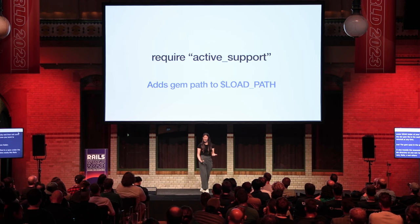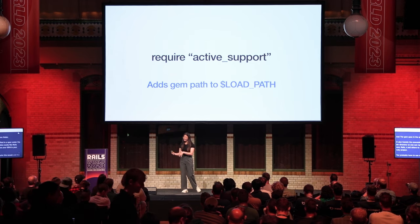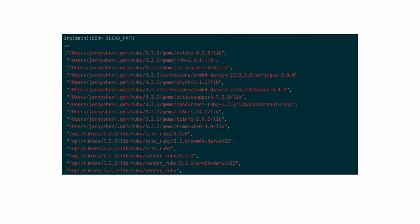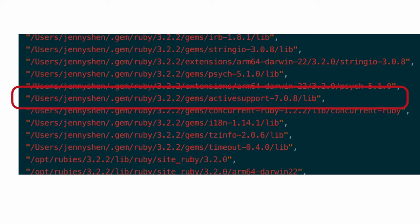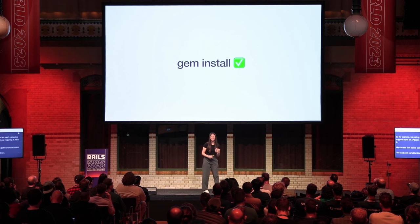To actually use your gem in your Ruby project, you probably have to use require. This would add the gem path to the load path variable in Ruby so Ruby can run its code. For example, if we pull up an IRB session, we can't call Active Support's blank? without requiring it. After we require it, we can see that Active Support's gem path is now included in the load path variable. That's gem install in a nutshell.